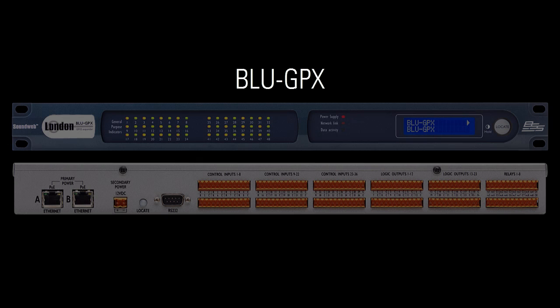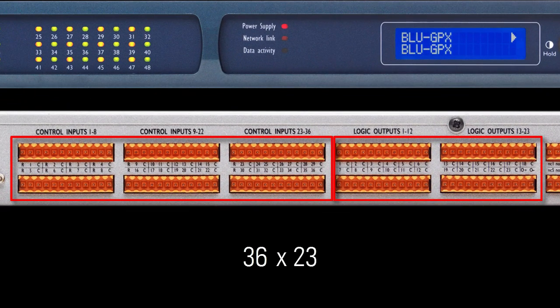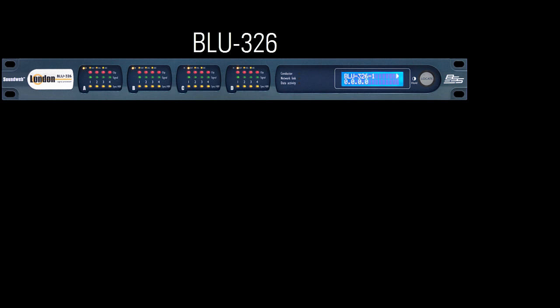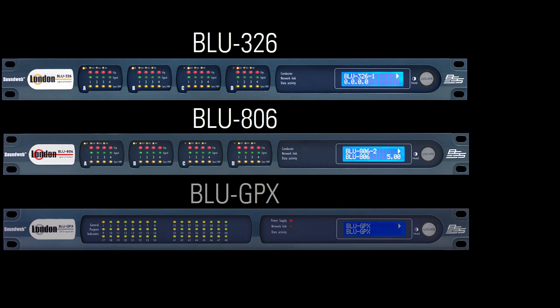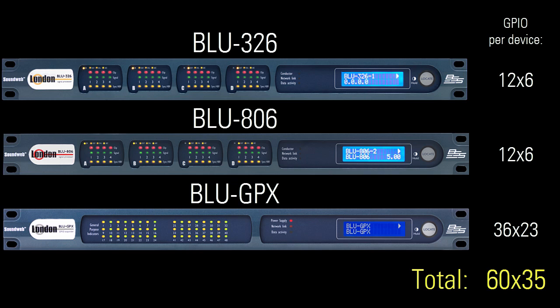The Blue GPX is a GPIO expander which is very useful for high GPIO count applications. The Blue GPX offers 36 GPI and 23 GPO. For example, with a three-device system consisting of a Blue 326, a Blue 806, and a Blue GPX, this would be a 60 by 35 GPIO system.